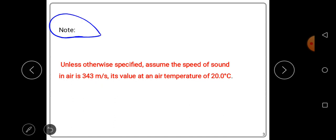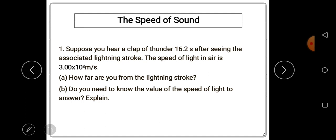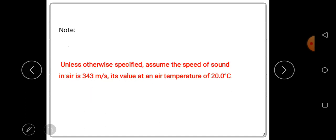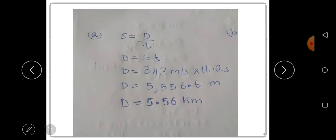So let's find how far are you from the lightning stroke. They want us to find the distance. So speed is given by speed is equal to distance over time.